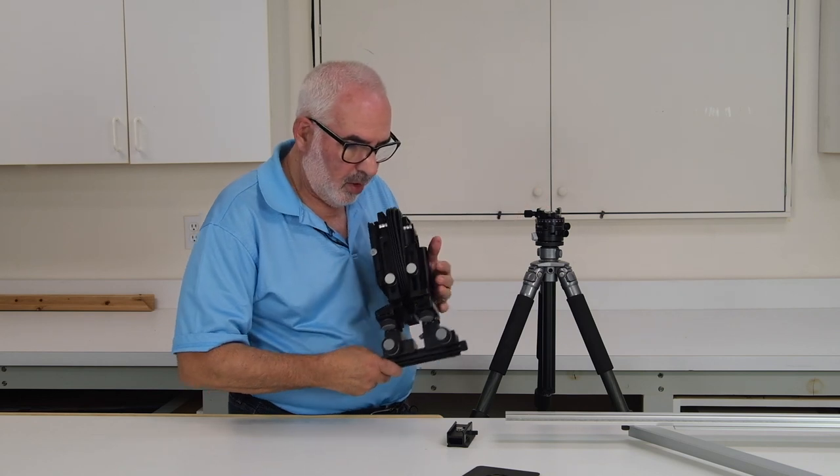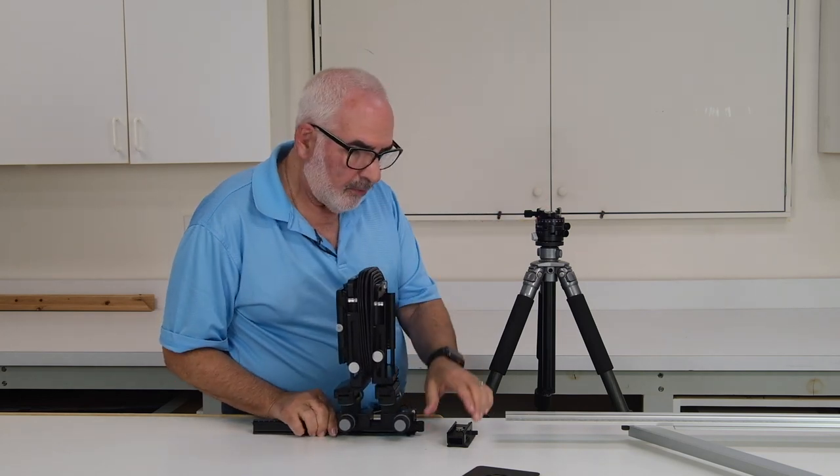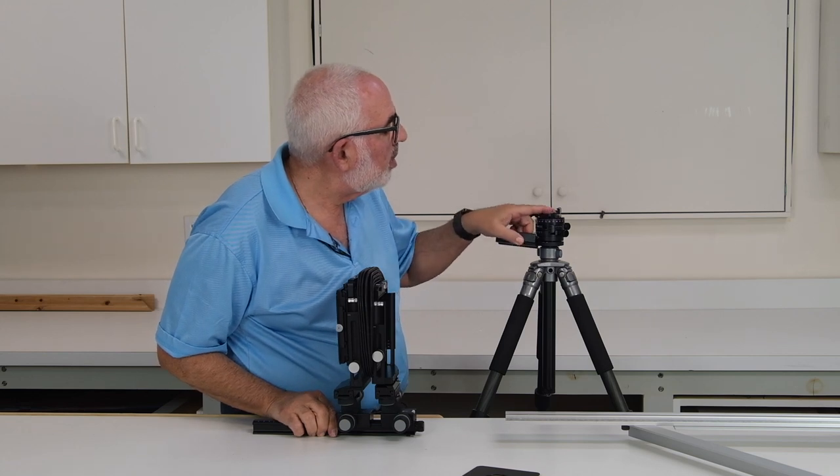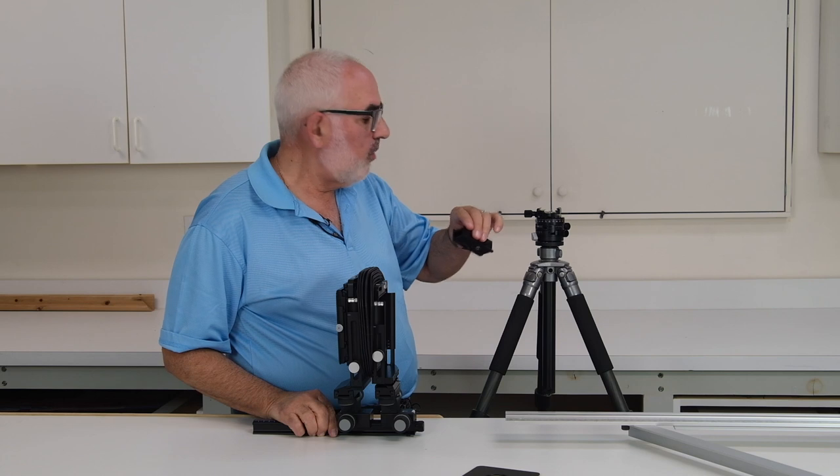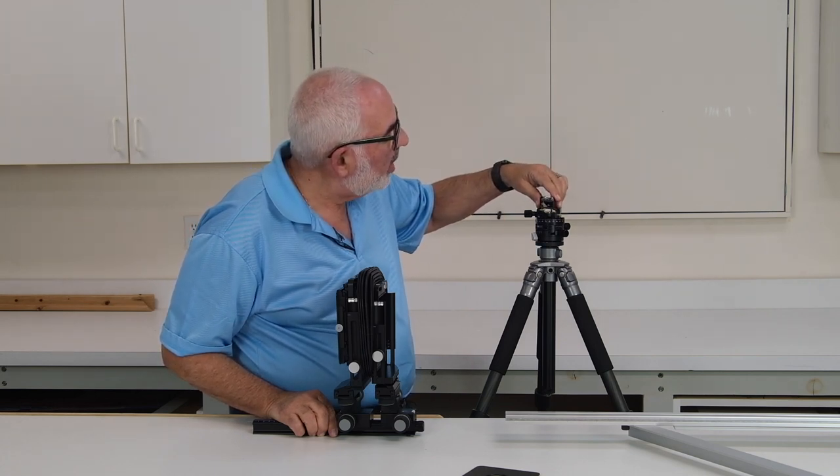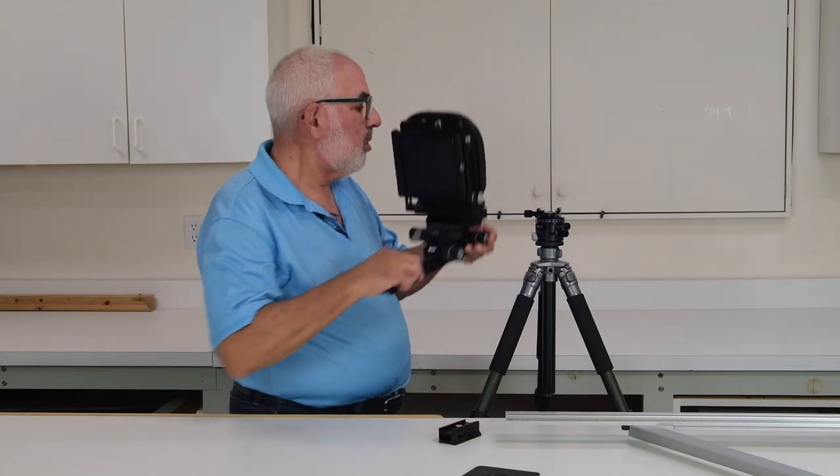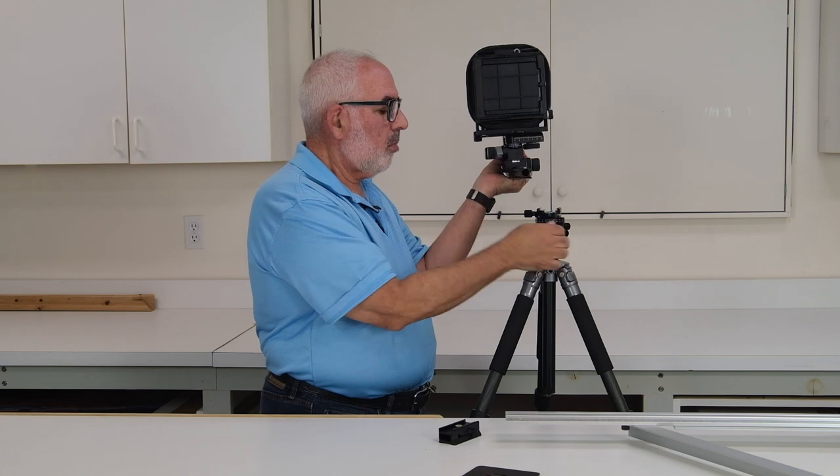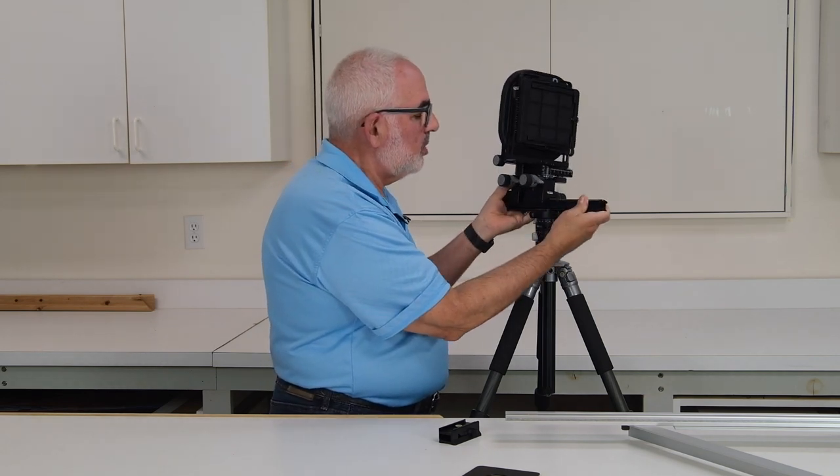We're going to put it on the rail here. You'll notice two things here on this Arca tripod head. It's got an inner groove for the smaller rail like this, so you don't need to use this. And if you have a regular Arca adapter on your head, you use this rail. But for this one I'm just going to use this.